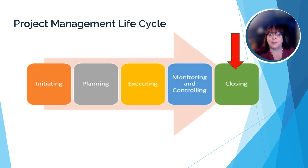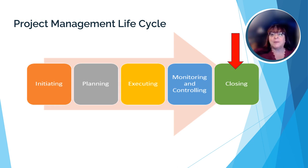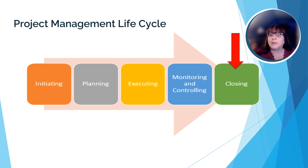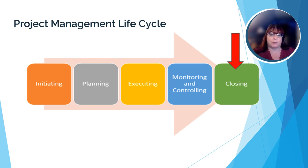Remember this graphic from the Unit 2 review? As we noted in Unit 3, we're going to be seeing this over all of the units as we look at each of the five processes of the project life cycle: initiating, planning, executing, monitoring and controlling, and closing. In Unit 7, we're looking at the final phase of the project — the closing. This is the phase that happens once the project has been fully implemented and it's ready for the final deliverables to be delivered.